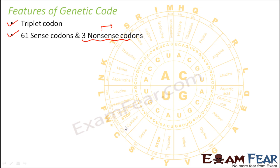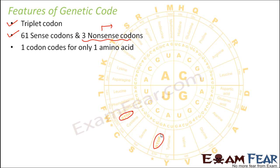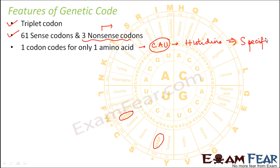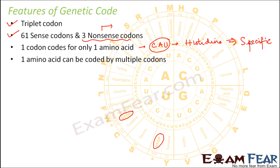Another feature is that one codon codes only for one amino acid. For example, CAU codes for the amino acid histidine and cannot code for any other amino acid — this shows that the code is specific. On the other hand, one amino acid can be coded by multiple codons. For example, histidine is coded by both CAU and CAC. This means the code is degenerate — multiple codons can code for the same amino acid.